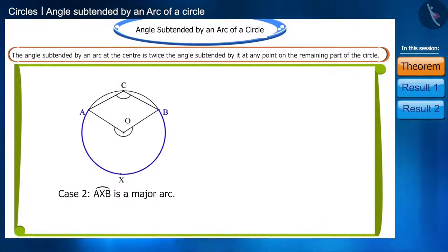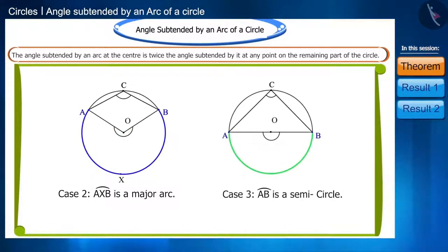We can repeat this process for the second case as well. Here, the angle AOB is the reflex angle and in the third condition, the angle AOB is the straight angle. You will find that the angle AOB is twice the angle ACB.